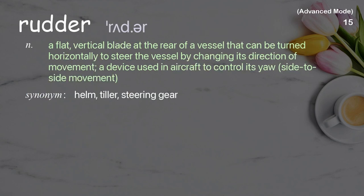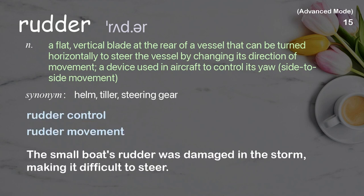Rudder: A flat, vertical blade at the rear of a vessel that can be turned horizontally to steer the vessel by changing its direction of movement. Also, a device used in aircraft to control its yaw, or side-to-side movement. Examples: rudder control, rudder movement. The small boat's rudder was damaged in the storm, making it difficult to steer.